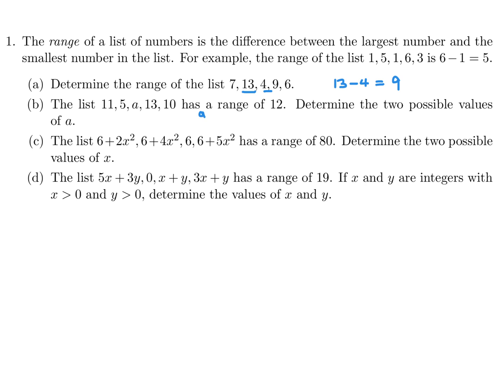Well, one scenario is that a is greater than 13. And if that's the case, then the range would be a minus the smallest number. And they're saying it's 12, so that means a would be 17. The other scenario is if a is the smallest number, meaning it's less than 5, then the range would be calculated as 13 minus a. And they're saying that's 12, so that means a would be 1. So 17 and 1 are the two possible values of a.